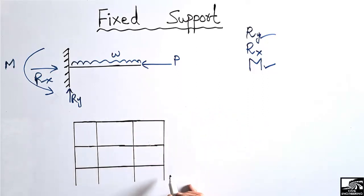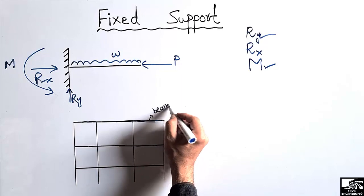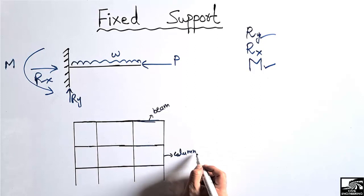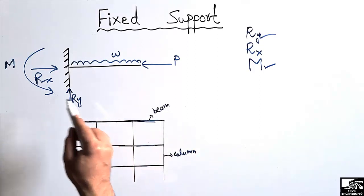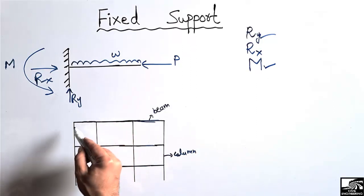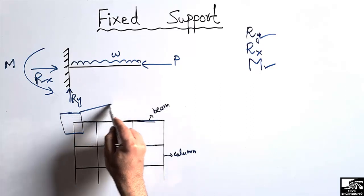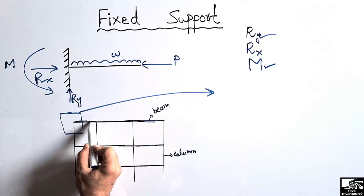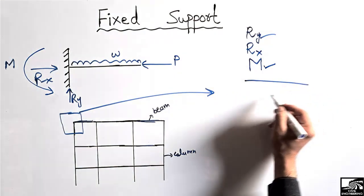Consider a multi-story building. The horizontal members are beams and the vertical members are columns. This is a three-story building. I want to explain where we can identify a fixed support. Let's consider a beam-column joint and draw it in more detail.